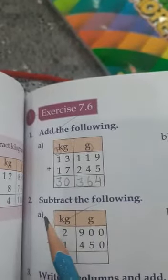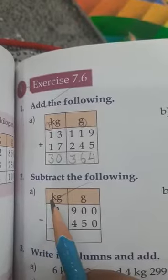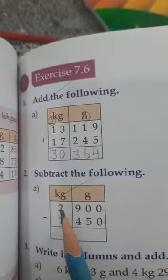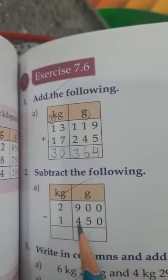Second part heading: Subtract the following. First sum statement given upside. There's kilogram and gram statement. I have 2 kilogram 900 gram minus 1 kilogram 450 gram.